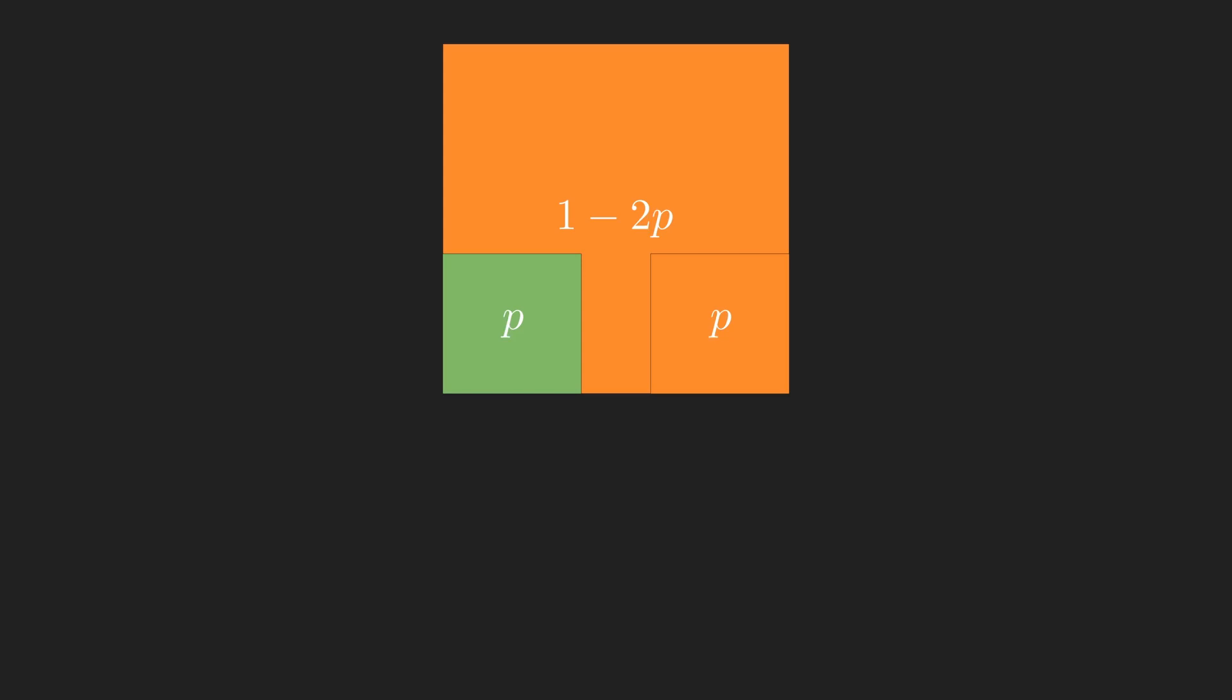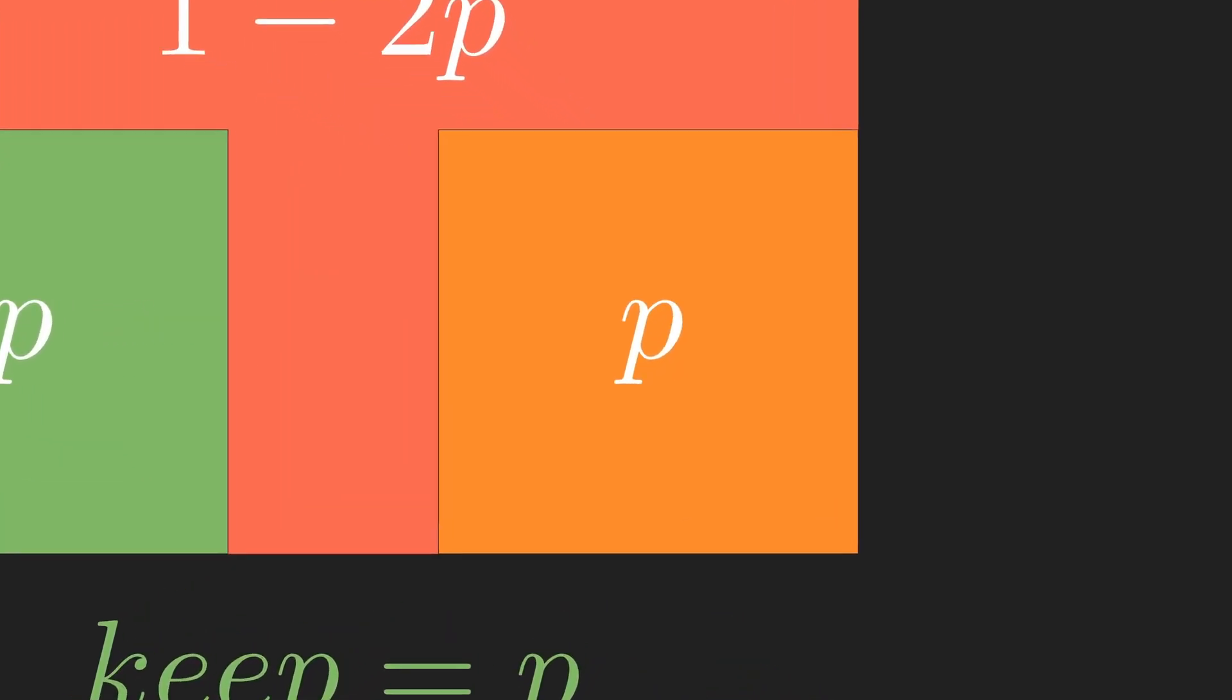Therefore, the area we must discard is equal to the size of our original square, minus 2p. As before, we can zoom in on our new working square of size p. Our keep and working squares are now of size p squared, so the area of our second discard square is p minus 2p squared, which we can write as p times 1 minus 2p.